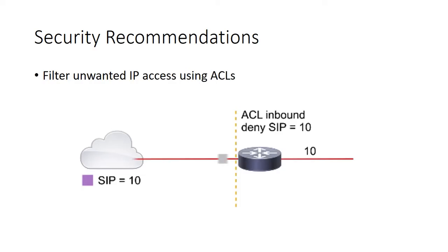There are a number of security recommendations for preventing access attacks. First, filter unwanted IP access using ACLs. When a user spoofs the IP address of a trusted network range — say the 10 network on the inside of a border router — we apply an inbound ACL to deny any packet with a source IP from that 10 network coming from the outside, since those packets should never arrive from outside. This helps us detect and block spoofed packets.